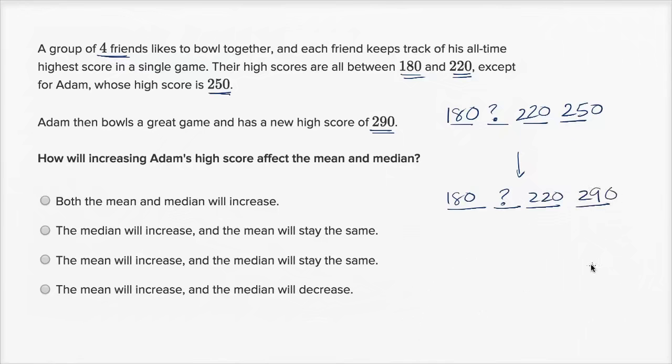So my question is, well, the first question is, does this change the median? Well, remember, the median is the middle number. And if we're looking at four numbers here, the median is going to be the average of the middle two numbers. So we're going to take the average of whatever this question mark is and 220. That's going to be the median.